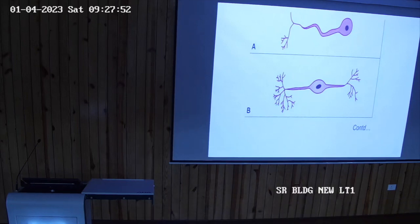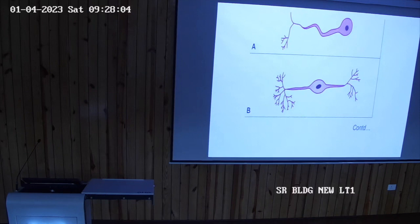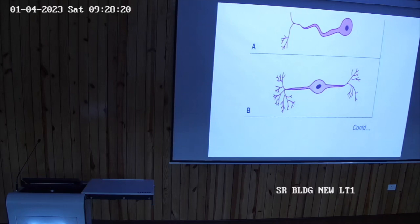Ependymal cells make the covering of the cavities. There is the lateral ventricle, fourth ventricle, third ventricle, and central canal. All these cavities are lined by the ependymal cells. So all these are the neuroglial cells in the central nervous system.